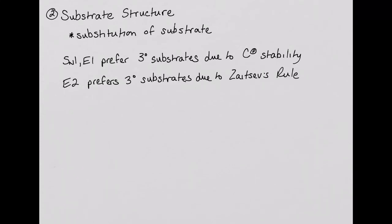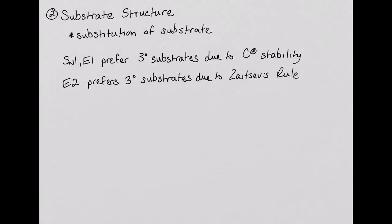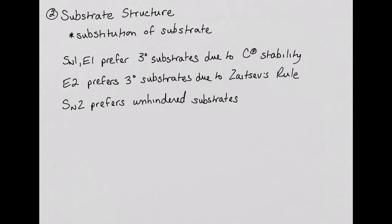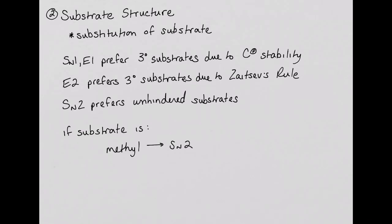The SN2 mechanism prefers unhindered substrates. Therefore, methyl substrates will react most quickly, and tertiary substrates will not react at all. Depending on the substitution of the substrate, we can make some predictions about which mechanisms will predominate. If the substrate is a methyl halide, then most commonly the SN2 mechanism will predominate, because all of the other mechanisms prefer more substituted substrates.